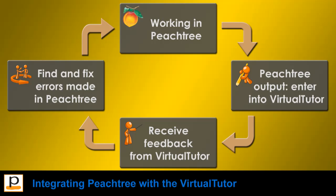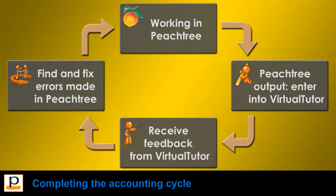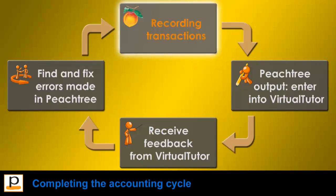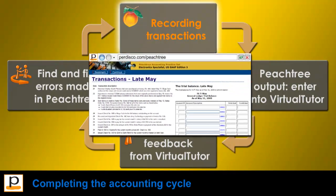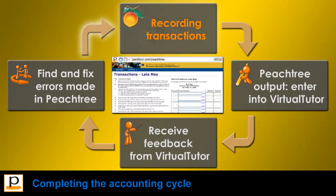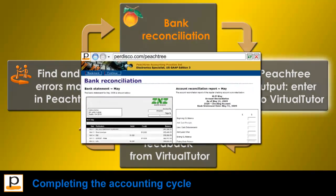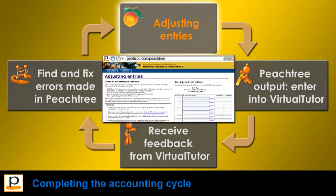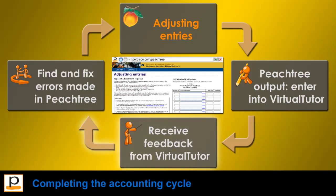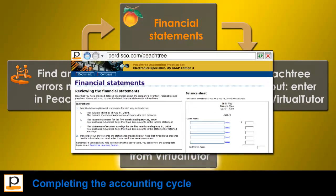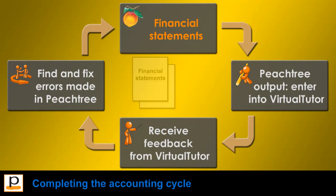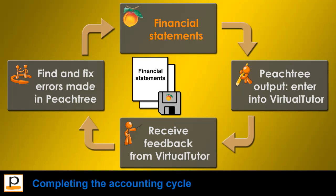Students then apply this process to each of the remaining parts of the practice set to complete the accounting cycle: recording further transactions for May and generating different trial balance reports, performing a bank reconciliation, recording adjusting entries and generating an adjusted trial balance, and generating financial statements. As a further step, you can ask your students to print their financial statements and submit them along with their Peachtree data file for verification or optional manual grading.